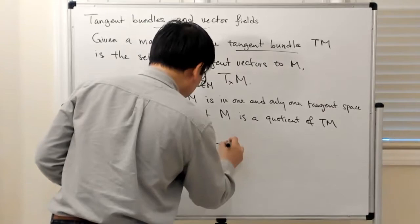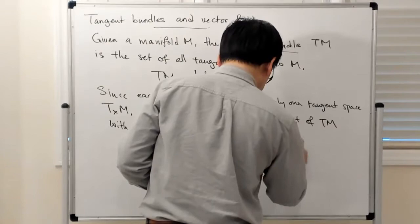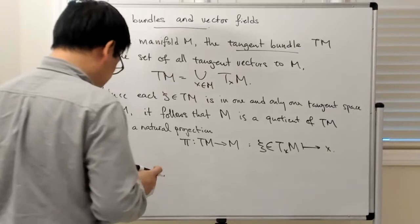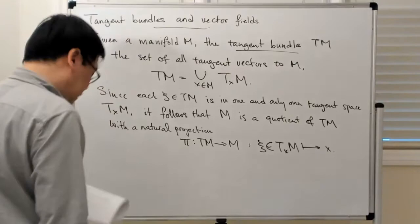So π is a map from TM to M, where given a tangent vector in a specific tangent space TxM, I map it to the base point X. So there's a natural projection of the tangent vector to the base point of that tangent vector.